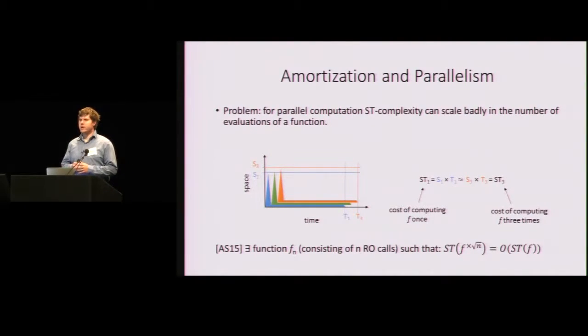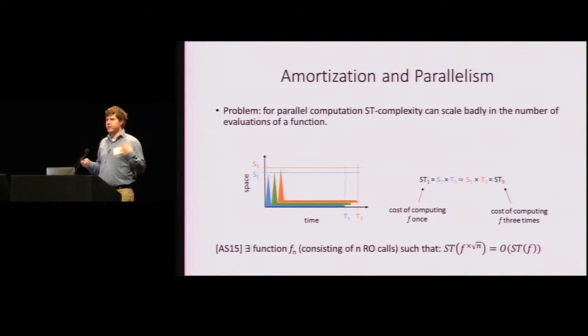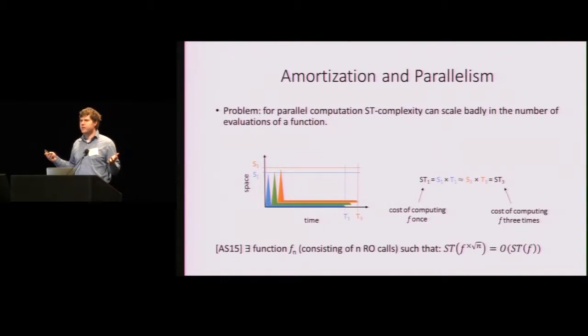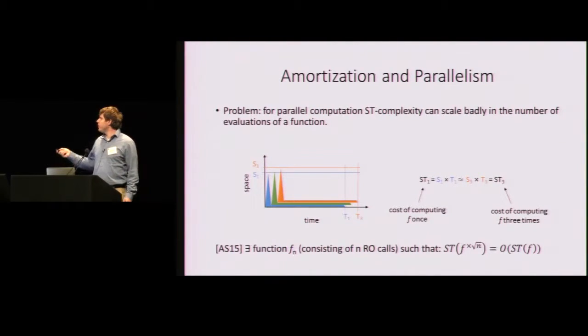The problem is for parallel computation, ST complexity can scale badly in the number of evaluations of a function. So suppose, for example, we have a function where we need a lot of space initially to compute the function, but we only need a lot of space for a very short period of time. Well, in this case, the ST complexity of the evaluation strategy is quite high. But if we wanted to evaluate multiple instances of the function, we could simply pipeline and evaluate multiple instances in parallel without increasing space-time complexity. In particular, there exist functions where you can evaluate up to square root n instances of the memory-hard function without increasing space-time complexity at all.